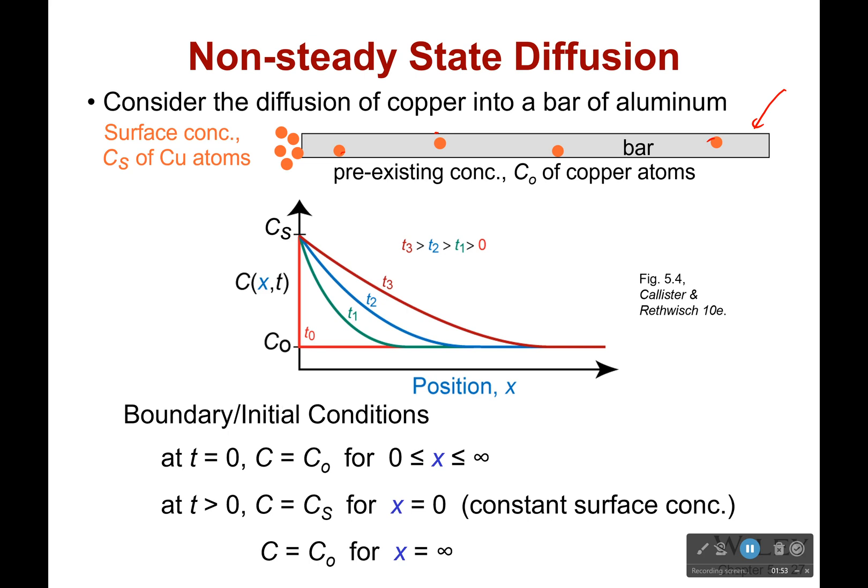So we have to look at this and figure out some boundary conditions. Well, at time equals zero, our concentration within it is going to be equal to C₀, whatever the initial concentration of copper atoms is in my bar, from zero to infinity. At time more than zero, our concentration at the surface is going to be equal to whatever this surface concentration of copper atoms Cs is, and it's at x equals zero. And then for everything else, C equals C₀ for x equals infinity. For some large objects, infinity can be assumed as a finite number.